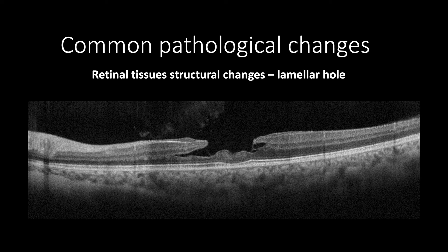The lamellar defect includes the outer nuclear layer with relatively intact ellipsoid zone and external limiting membrane, with the formation of a cleft between inner and outer retinal tissue along with cystic formation.